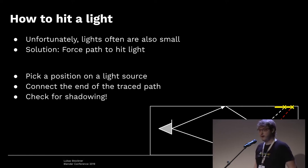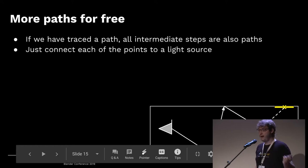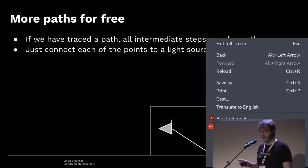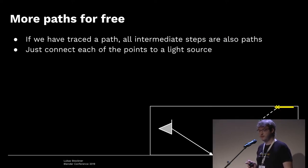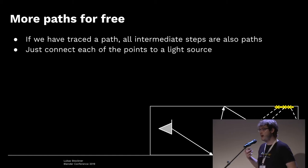Now that I showed how to create one light path, we need more. Any way to generate more light paths without a lot more computation is obviously a good thing. If we have a full path, all of the intermediate results are also valid paths. We can ignore everything and just connect at the first bounce — that's also a valid path. Then continue, connect again, and keep doing this to collect a lot of light paths from just one trace.